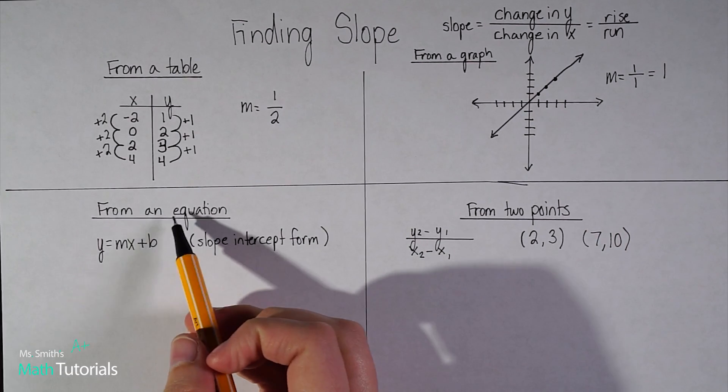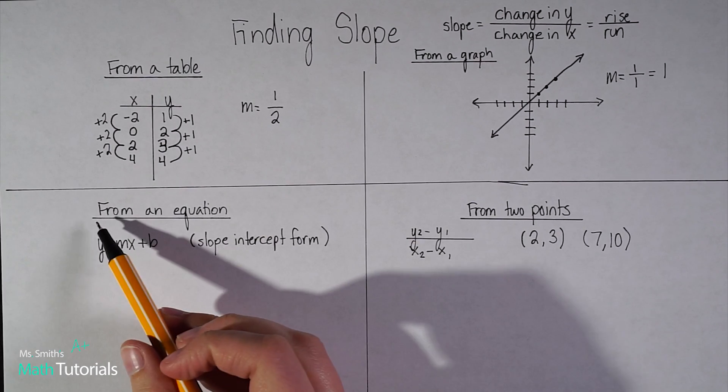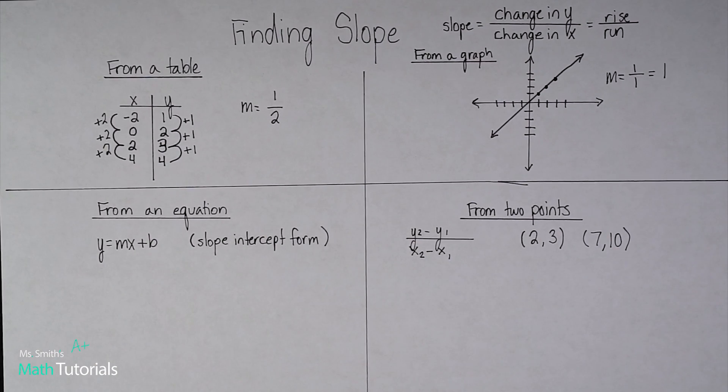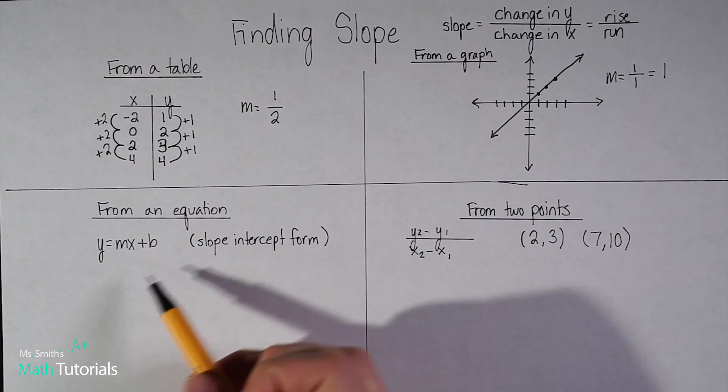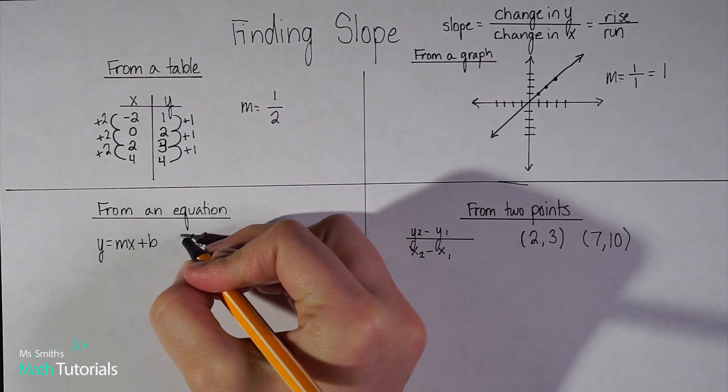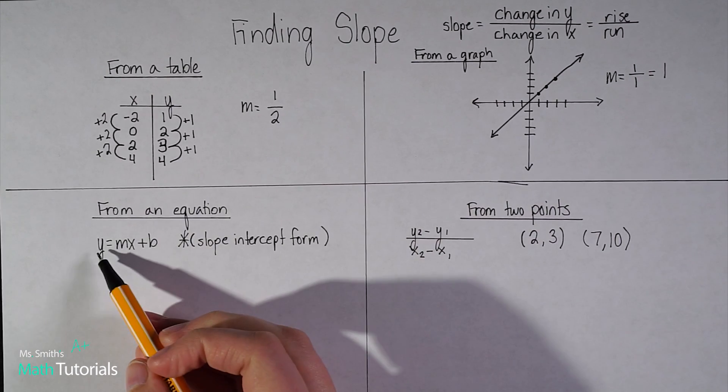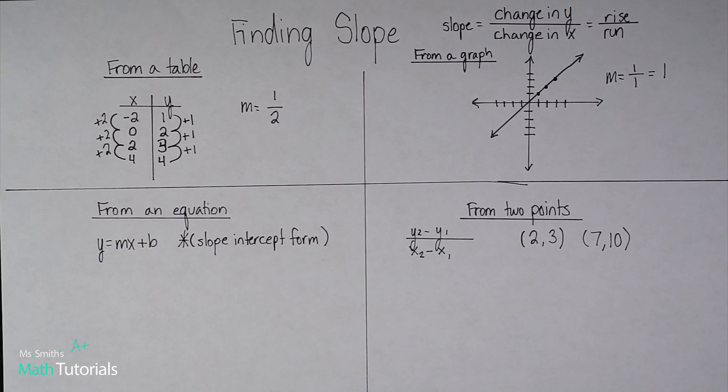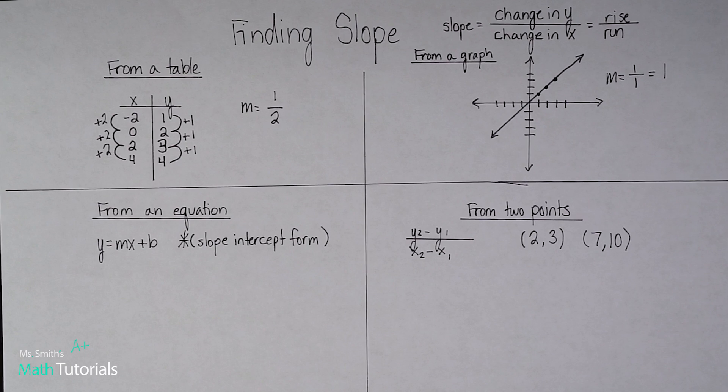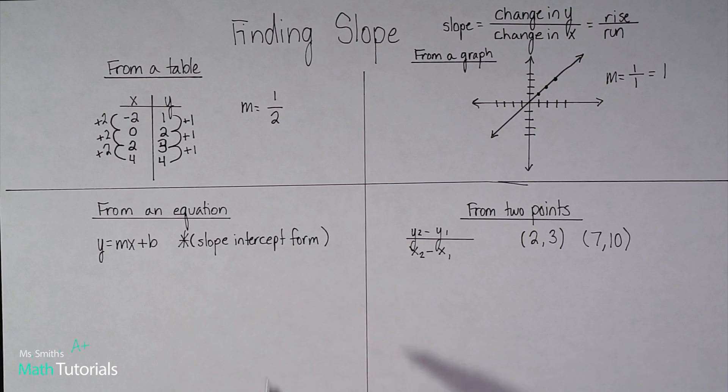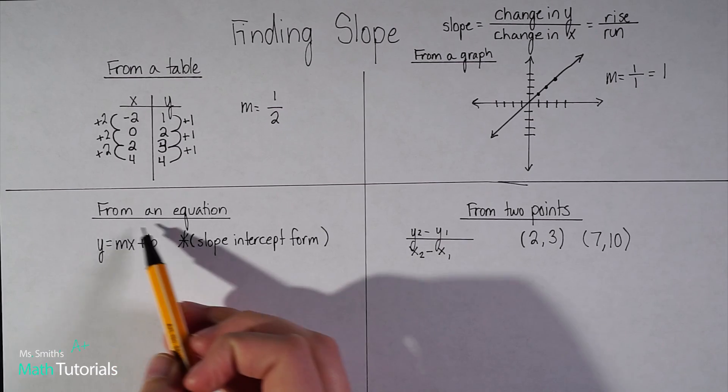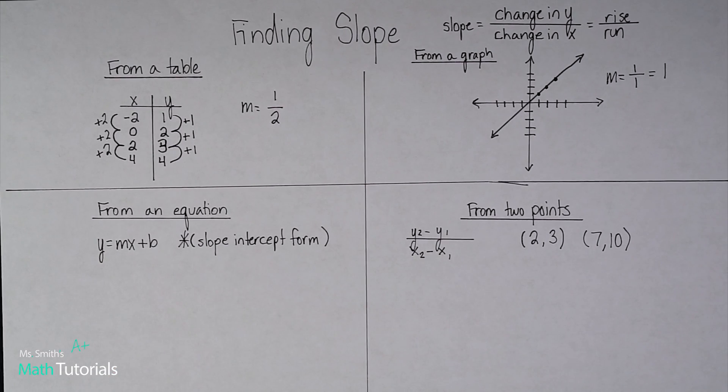So the next way, and the way we're probably going to see the most often from now through the end of the semester would be from an equation. So this equation is so important. Okay. This is called slope intercept form. So this is the first time I'm talking about it in my tutorials, but we'll be talking about it a lot from now on. And you'll have to know when I say slope intercept form, let's get it in slope intercept form or refer to it in some way.